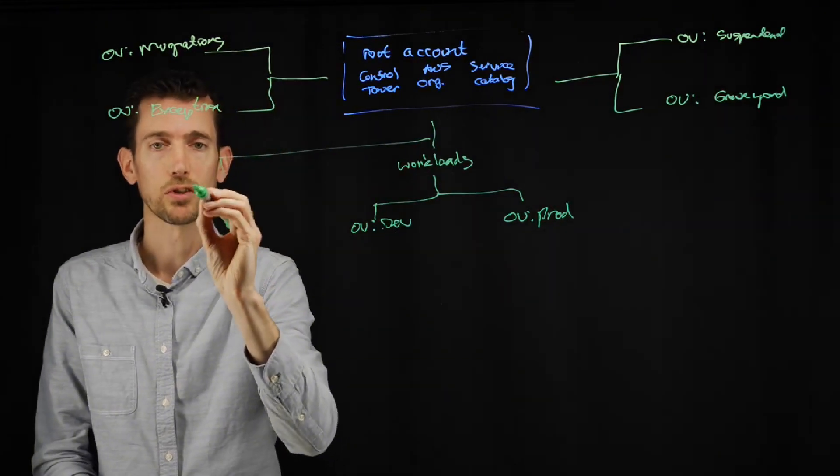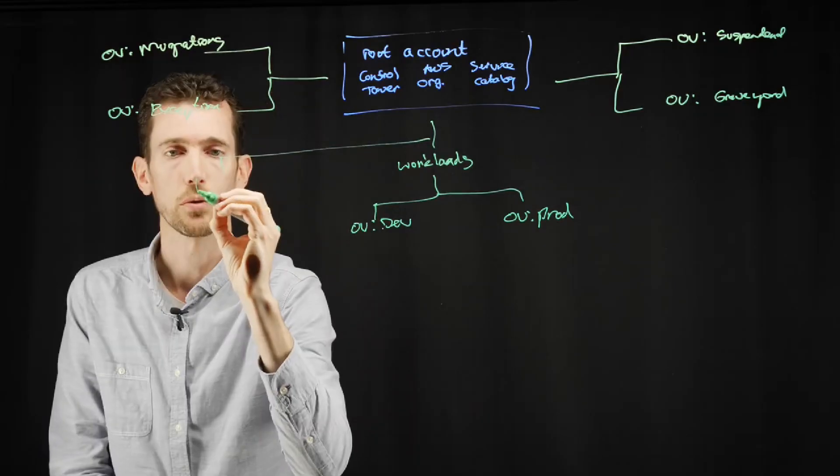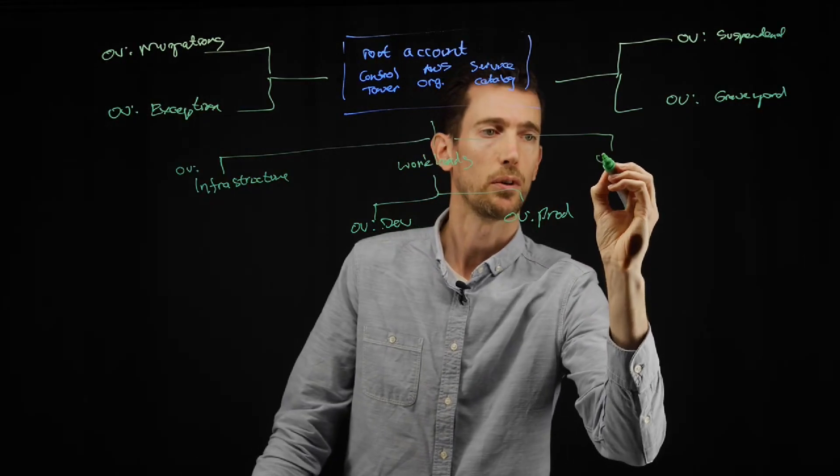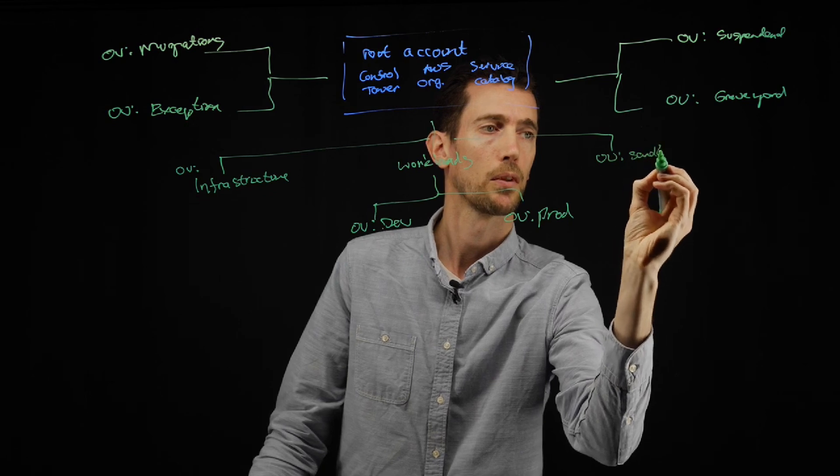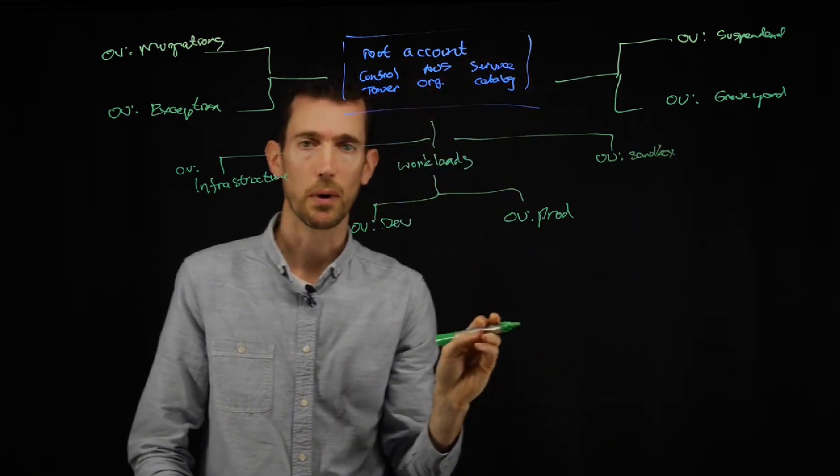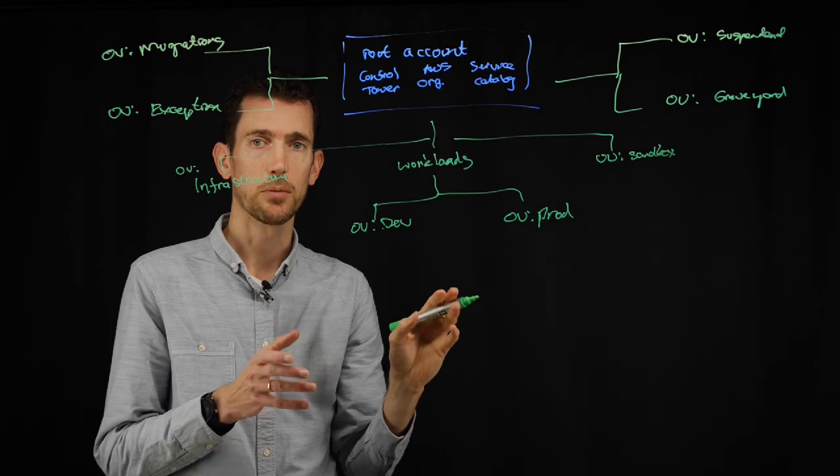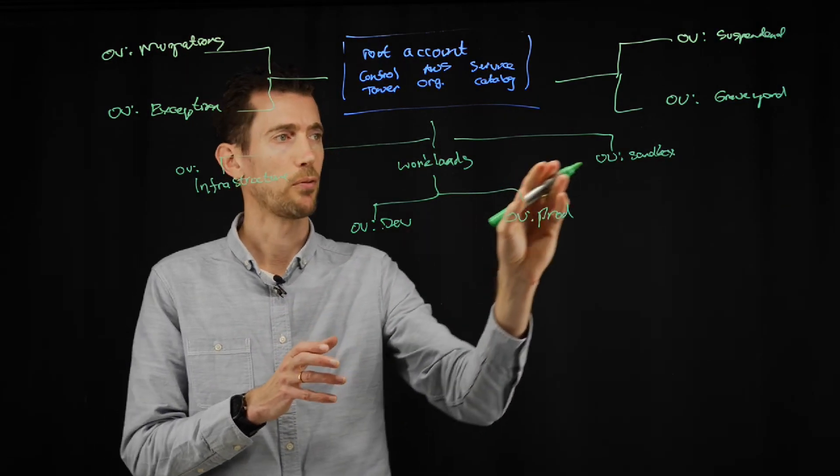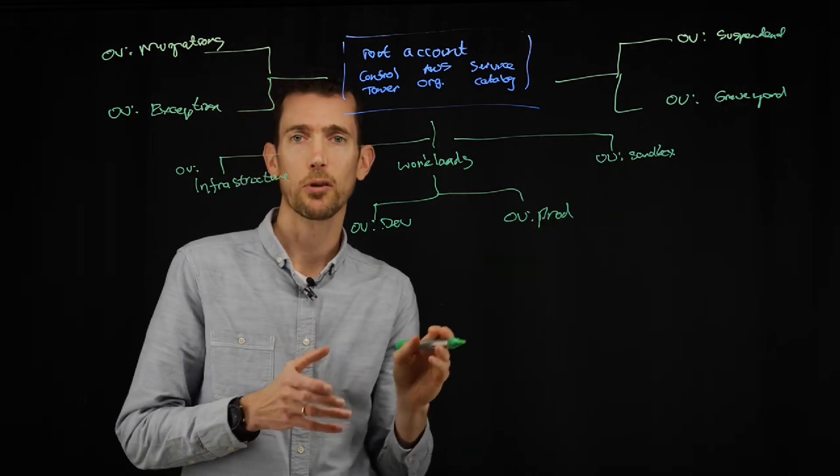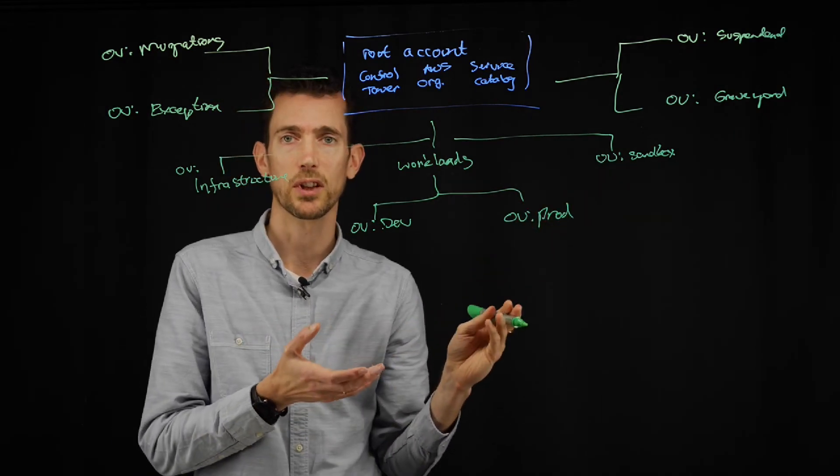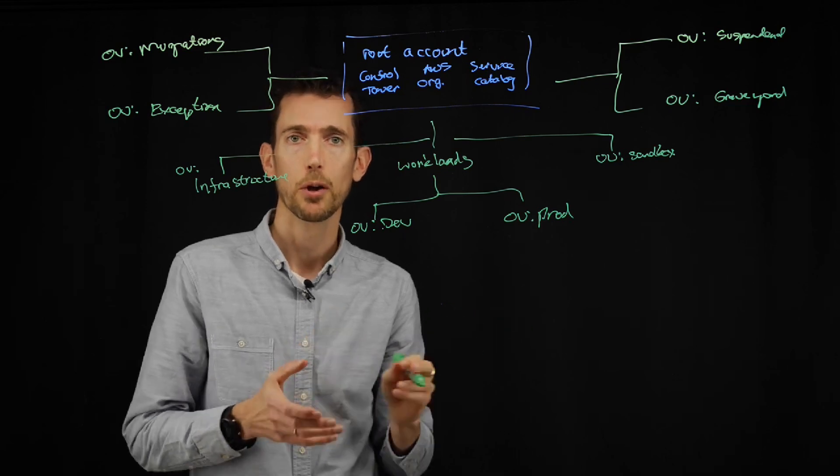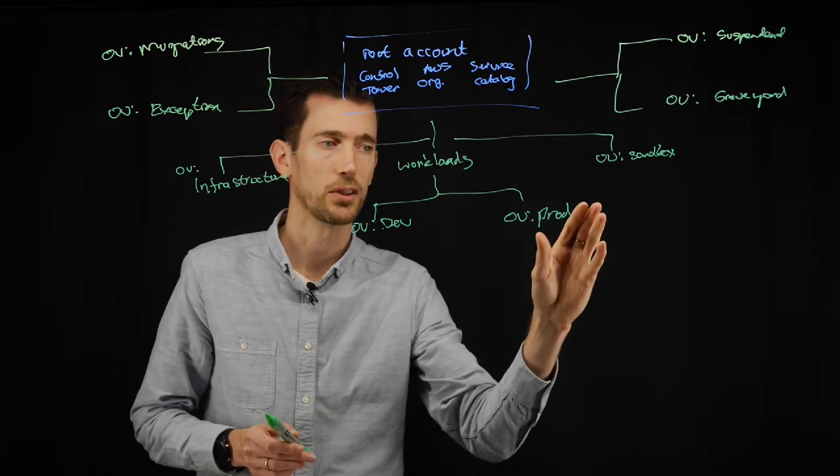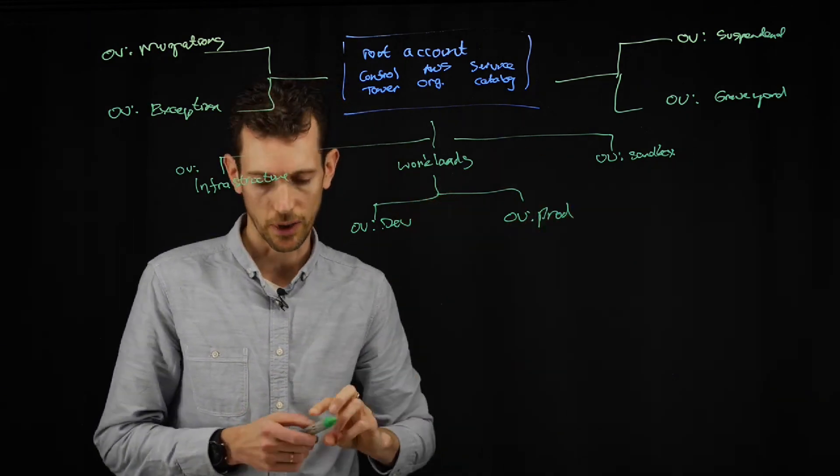So as well as this, you'd want some shared services. We'll call that infrastructure. You might have one for sandbox. And this is where, while your teams are getting started with AWS, they can experiment. And you might have relaxed policies there. This would kind of be a short-lived area. You wouldn't want accounts to live there for a long time. But it allows your teams to try things out with less restrictive policies before they get moved into the workloads area.